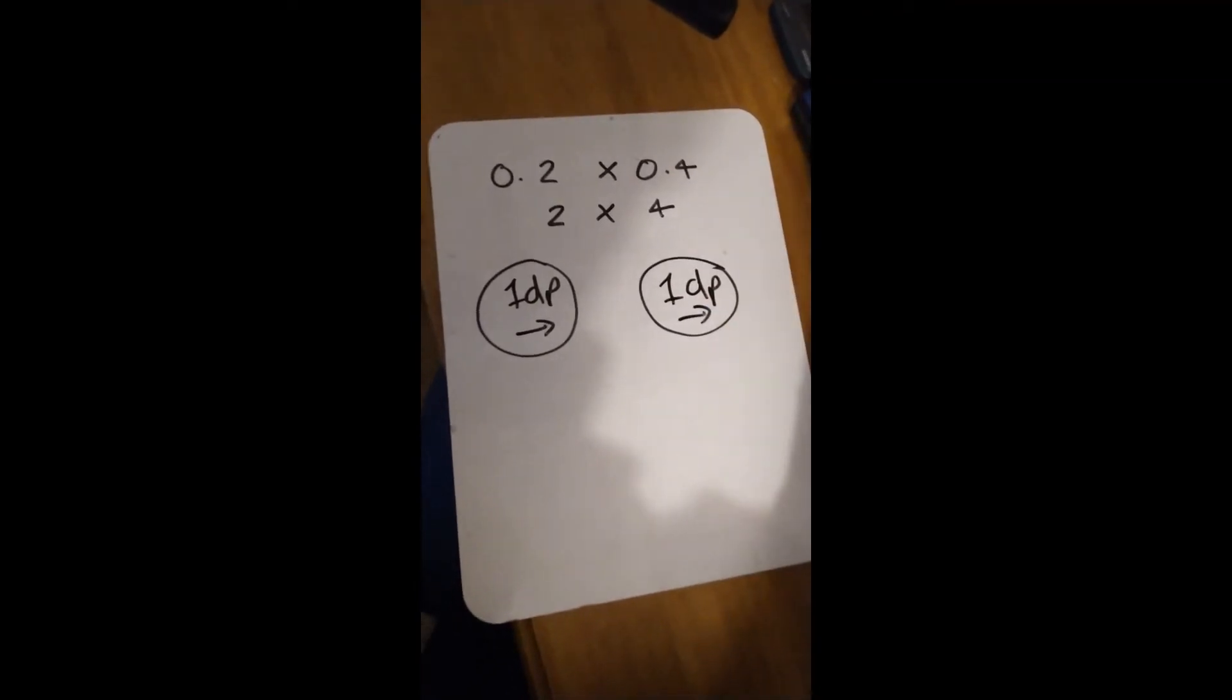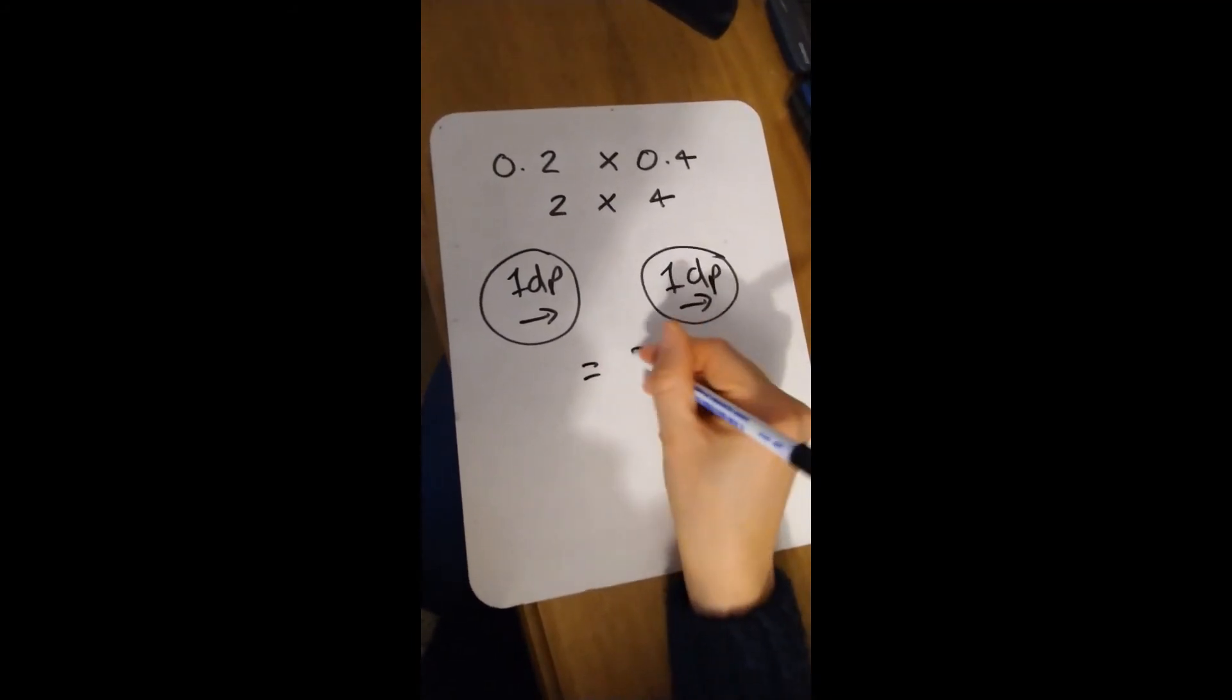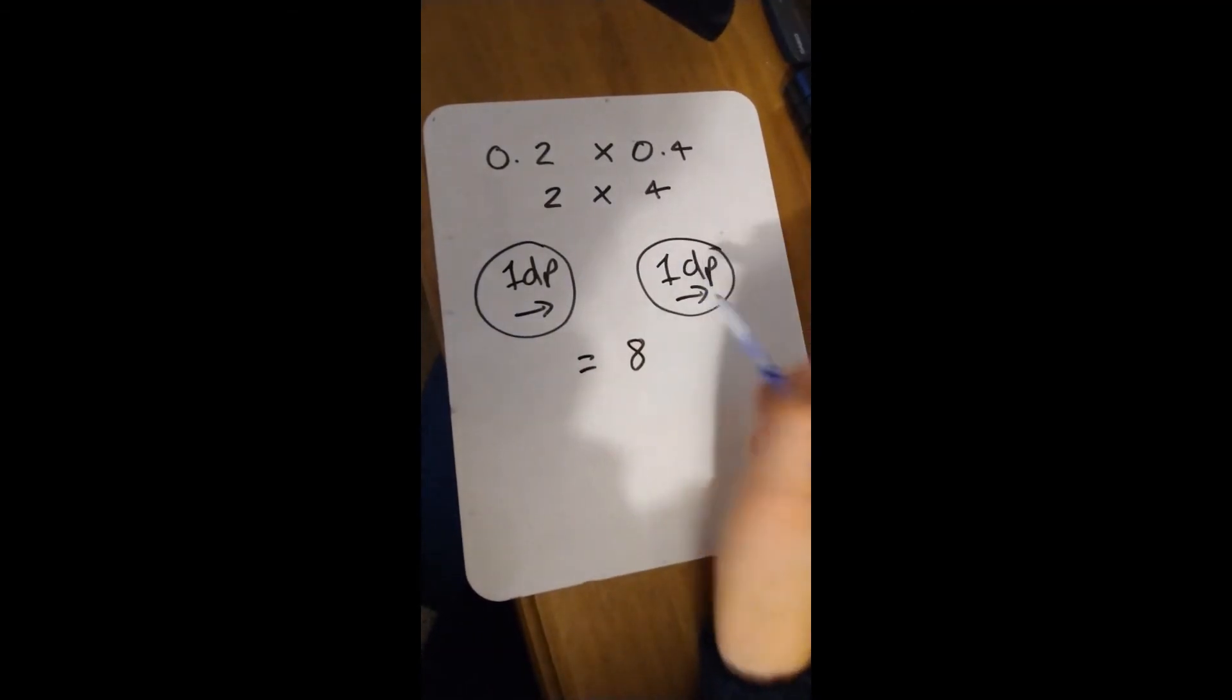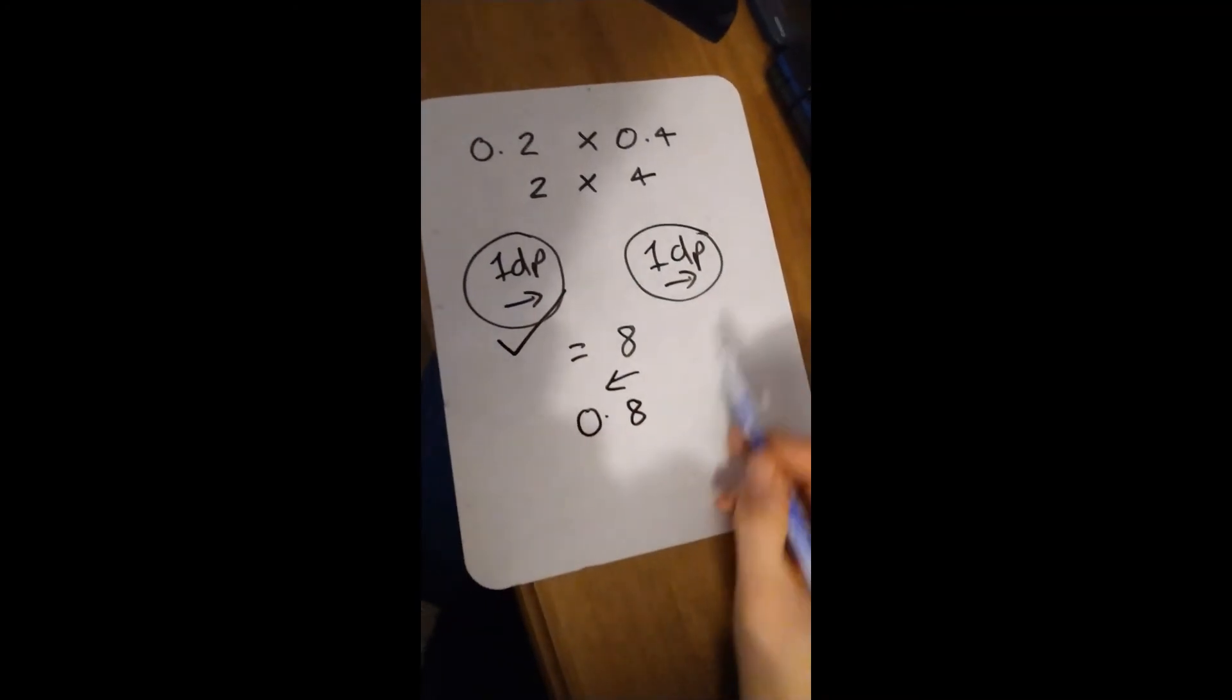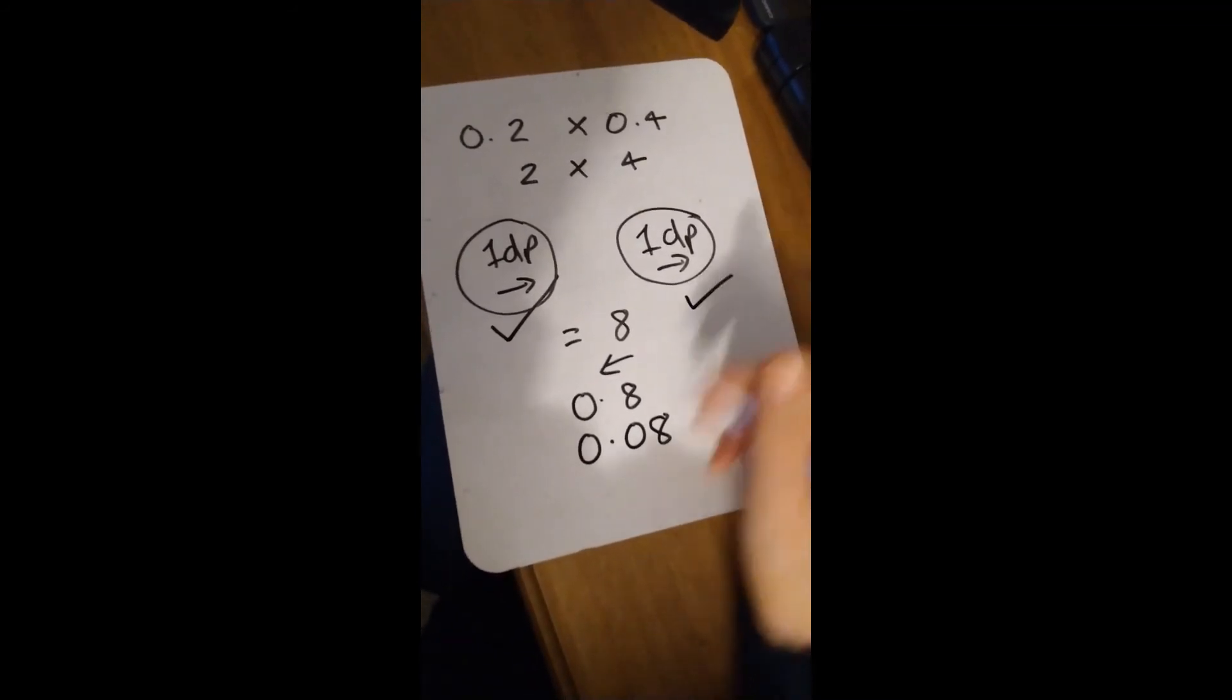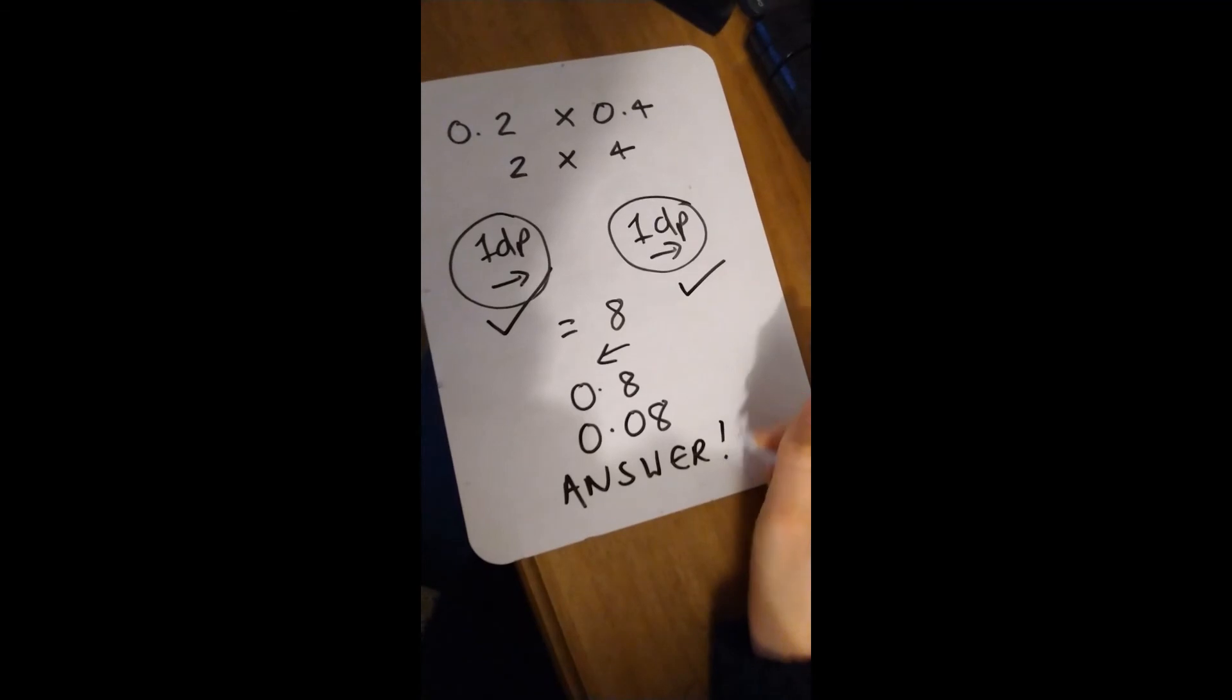Now I do my sum: 2 times 4 equals 8. All I need to do is remember to put these two decimal places back in. So one to the left gives me 0.8, another one to the left gives me 0.08, and that is my answer.